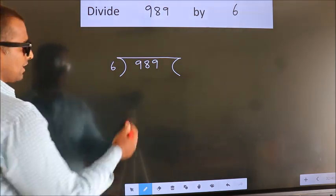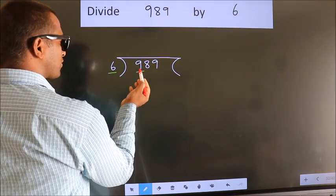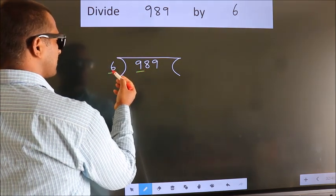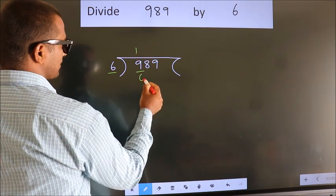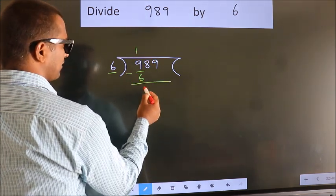Next, here we have 9 and here 6. A number close to 9 in the 6 table is 6 once 6. Now we should subtract. We get 3.